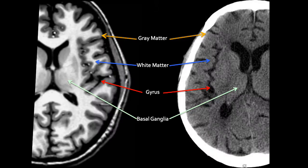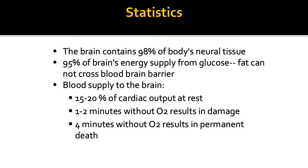If we take a look here, the image on your left is a typical T1-weighted MRI axial sequence, and at the same level with the same patient is a non-contrast axial CT image of the brain. You can see that in CT the gray matter appears white and the white matter appears gray, and the basal ganglia — which are gray matter islands — are actually white. The brain contains 98% of the body's neural tissue.